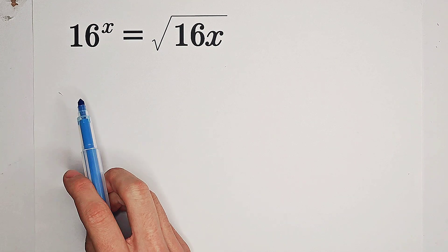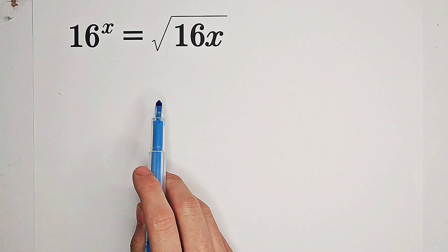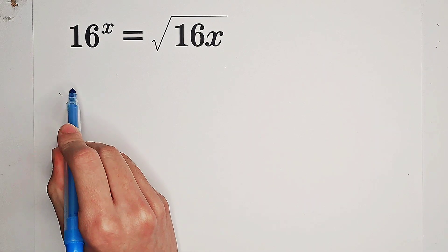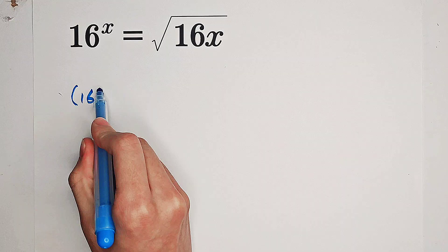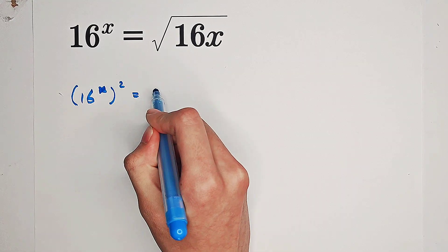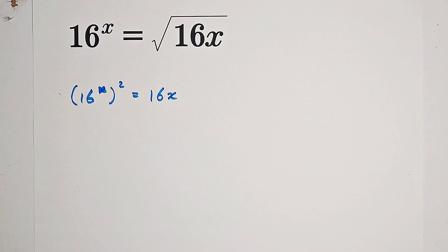Solve for x such that 16 to the power of x equals square root of 16 times x. I will do this by first squaring both sides because we see a square root. So we get 16 to the power of x, all squared, equals the right side which will be 16 times x.